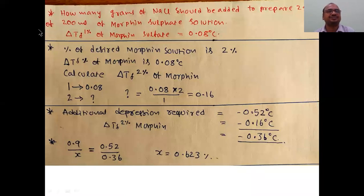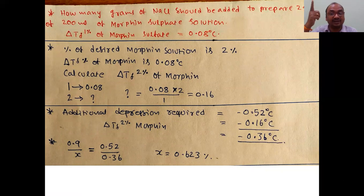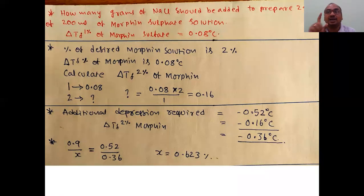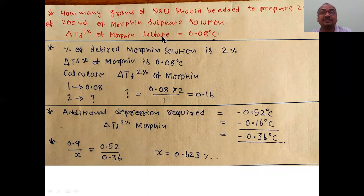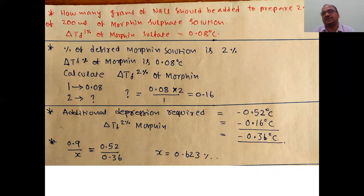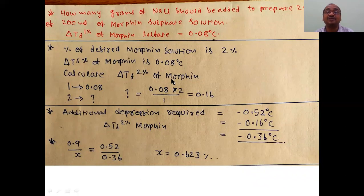Problem three: How many grams of NaCl should be added to prepare 200 ml of a 2% morphine sulfate solution? The data given is delta Tf of 1% morphine sulfate. When the concentration changes, the freezing point depression varies. The desired solution is 2% morphine, but the given delta Tf is for 1% morphine = 0.08 degrees. So for 2% morphine, double it: delta Tf = 0.16 degrees centigrade.